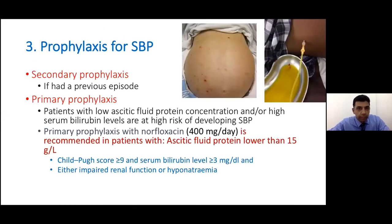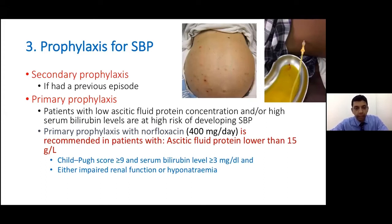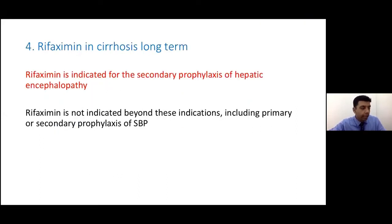Other treatments to save patients' lives include SBP prophylaxis — patients who have had SBP should receive secondary prophylaxis. Some patients may need primary prophylaxis: those with ascites, very low albumin, and low protein in the ascitic fluid are at higher risk of bacterial translocation and SBP, so we treat them with norfloxacin — but only for patients with severe disease defined by Child-Pugh score greater than 9 or bilirubin more than 3. Long-term rifaximin is used for patients who have had hepatic encephalopathy to prevent recurrence.